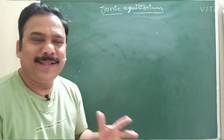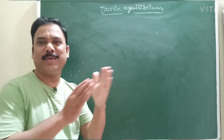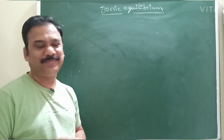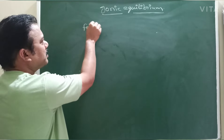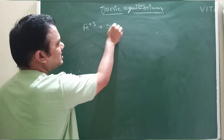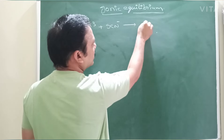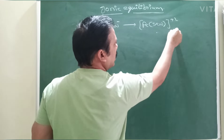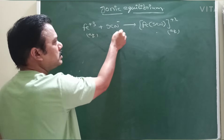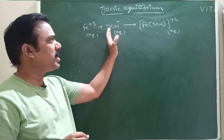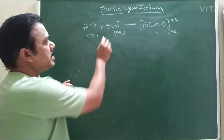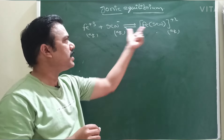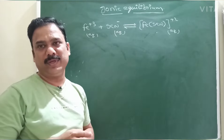Hello students. In this video I am going to explain about ionic equilibrium. Here, taking Fe³⁺ ion and SCN⁻ ion — when these two are added, FeSCN²⁺ ion will form in aqueous solution. In aqueous solution, Fe³⁺ ion and SCN⁻ ion combine to form FeSCN²⁺. An equilibrium exists between reactant ions and product ions. This is called ionic equilibrium.